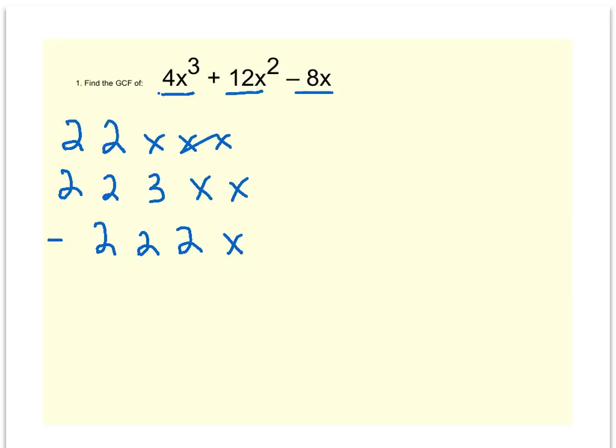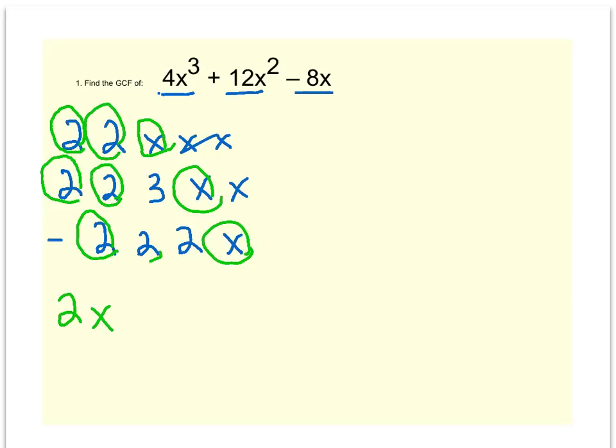So what do all three terms have in common that we can pull out? I see all three terms have a 2, so I can pull out a 2. All three have an x. And all three have another 2, so another 2 can come out. So 2 times x times 2 is 4x, so 4x is your greatest common factor.